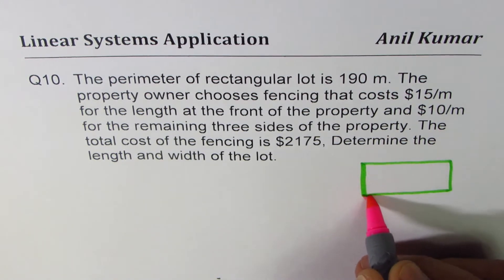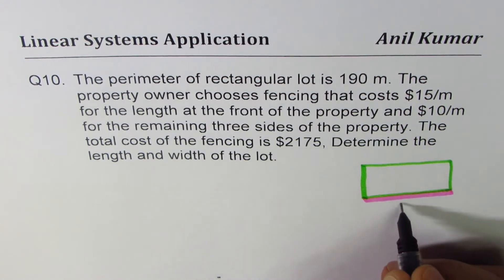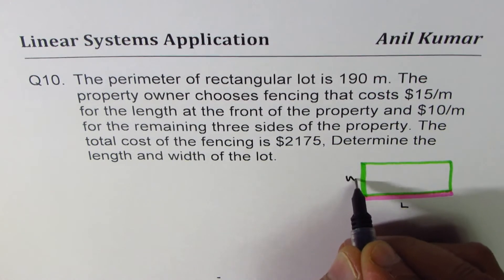Okay, let's say this is the front side, which is more expensive. Let the dimensions be L for length and W for width.